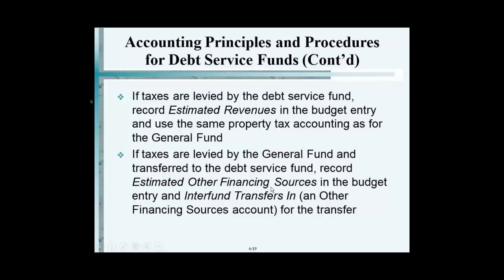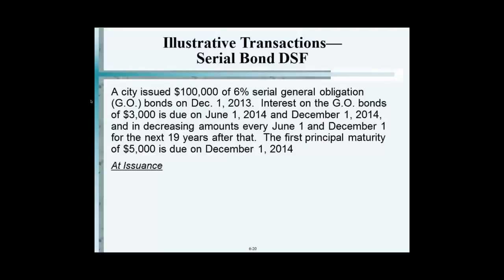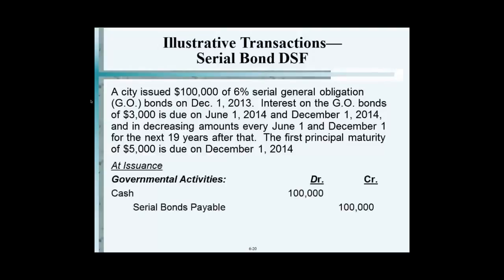There are quite a few journal entries here. So this is what they had — they issued 100,000 of 6% bonds. This is the detail on June 1st and December 1st.